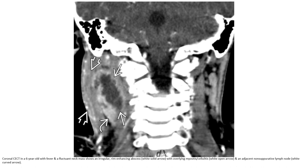This is contrast-enhanced CT in the same six-year-old with fever and painful neck mass, showing an irregular rim-enhancing abscess with overlying myositis, cellulitis, and an adjacent non-enhancing lymph node.